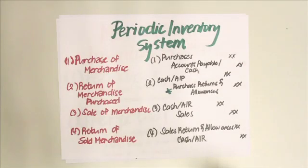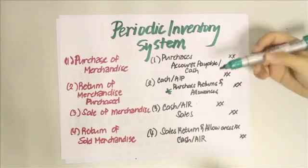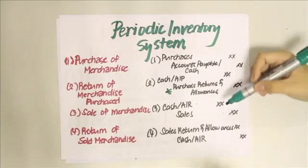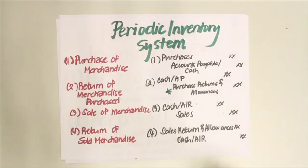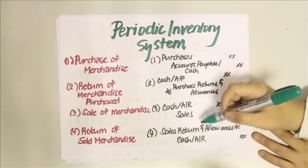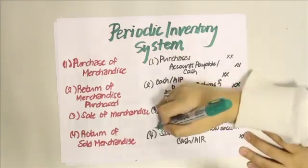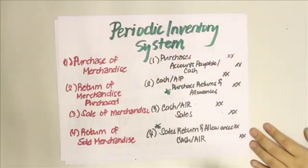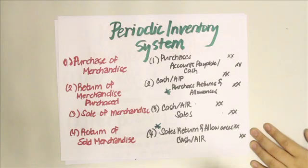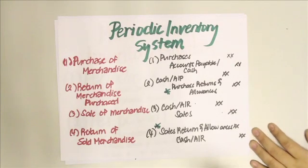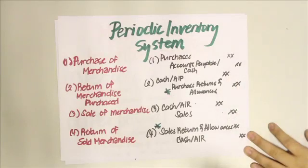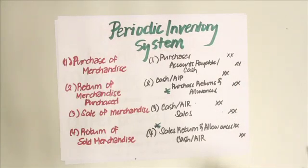For a sale of merchandise, it's a normal sale transaction — you debit cash or accounts receivable and credit sales. For a return of sold merchandise, you debit sales returns and allowances and credit cash or accounts receivable depending on what you return to your customer. Sales returns and allowances is deducted from your sales to get net sales.